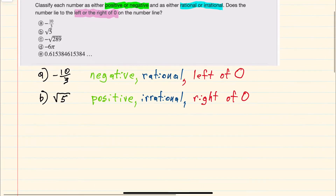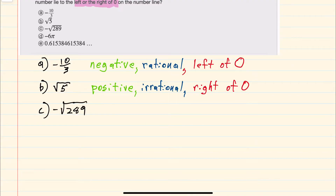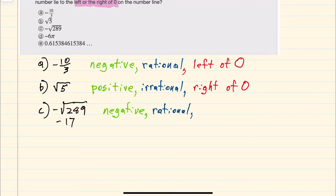Moving on to C, we have negative square root of 289. However, the square root of 289 is just 17, so we can simplify this to negative 17. That is negative, and since negative 17 could be written as negative 17 over 1, it's rational. Since it's negative, it would be to the left of 0.